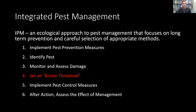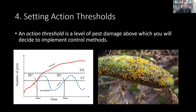Next we'll take a look at how to set an action threshold. An action threshold is a level of pest damage above which you will decide to implement control methods. What this means is you don't do something if you just have one — if one bug is not going to be a problem, you accept and tolerate that one bug. In step four, you try to decide at what point you must intervene.